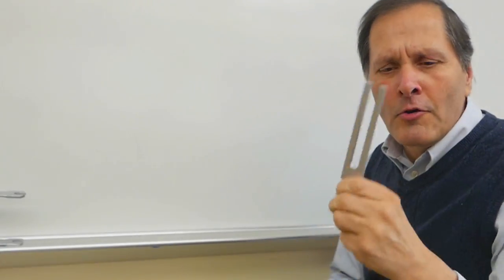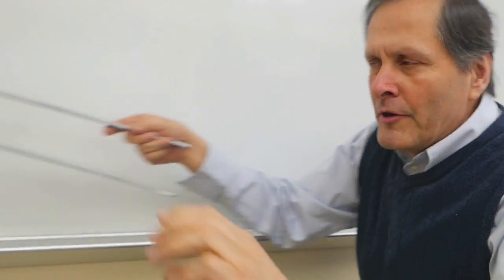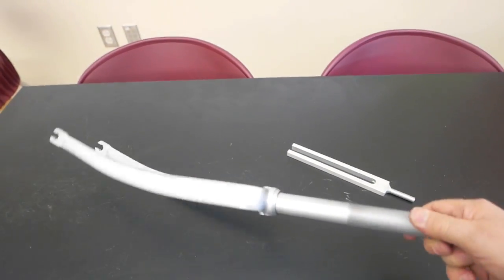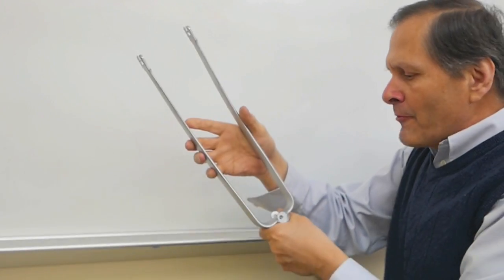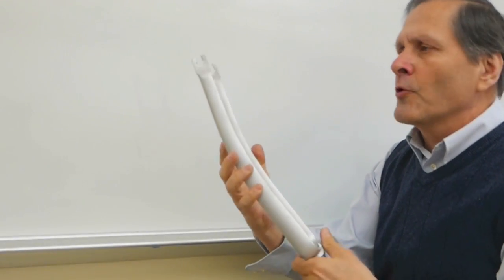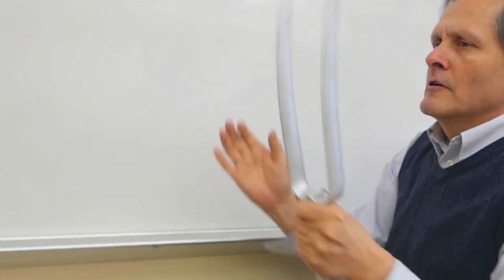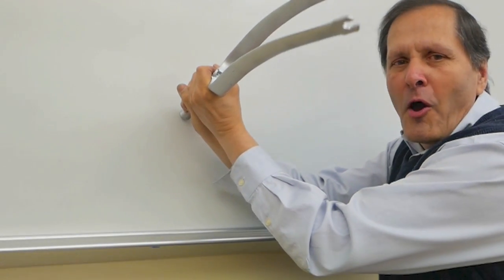So these are regular grade tuning forks. Now let's try our big one. Here's what it looks like. It hasn't been modified anyway, just painted. And it vibrates at 54 hertz, 54 vibrations per second. So, it's very low.